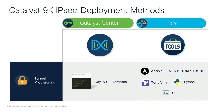Moving forward to the configuration of IPsec on Catalyst 9K, there are two methods available. The first option is a turnkey solution using the Cisco Catalyst Center, utilizing day-N CLI templates to efficiently provision the IPsec tunnel, which I'll be demonstrating later. Alternatively, for users who prefer a hands-on approach, they can configure IPsec using the switch CLI, or opt for an automated approach using tools such as Ansible, Terraform, Python, or leveraging protocols like NETCONF or RESTCONF.